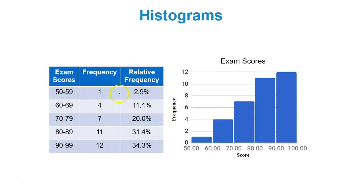For instance, I have a frequency table that has exam scores, frequencies, and relative frequencies. I have a histogram that shows these exam scores. Notice the y-axis has the frequency and the x-axis contains the score. If you look between 50 and 60, which is your first class 50 to 59, notice the rectangle goes up to 1. That's because the first class has a frequency of 1.